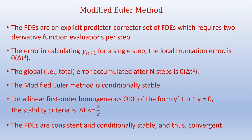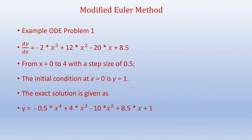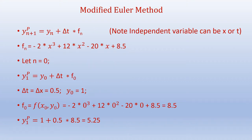We will now do the same example problem we solved before using explicit and implicit Euler methods. Here dy/dx is given and we need to integrate this equation to solve for y. x varies from 0 to 4 and we use a step size of 0.5. The initial condition at x = 0 is y = 1. The exact solution is also given.